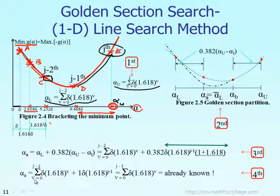For example, initially you are at point A, which corresponds to iteration J equal to zero. Then it moves to point B, corresponding to iteration J equal to one. Point C corresponds to iteration J equal to two. Point D corresponds to iteration J equal to three. And point E corresponds to iteration J equal to four.